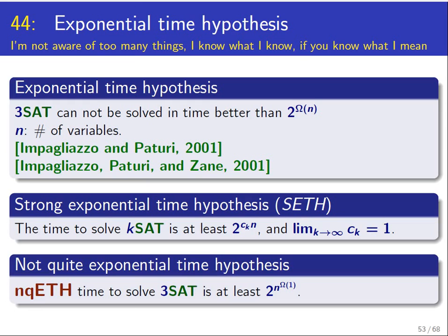For our purposes we need an even weaker version. The weaker version is that you cannot solve 3SAT in time better than sub-exponential. You might be able to do 2 to the square root of n time to solve the 3SAT formula with n variables, but you cannot do better than that. This weaker version of ETH is enough to imply the hardness result that I'm going to discuss shortly.